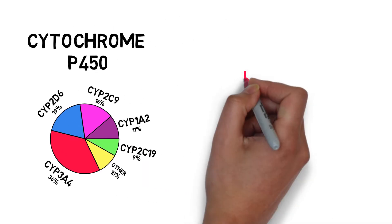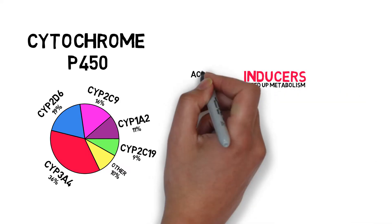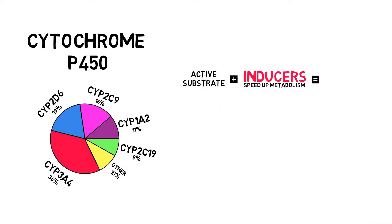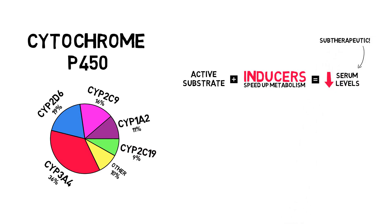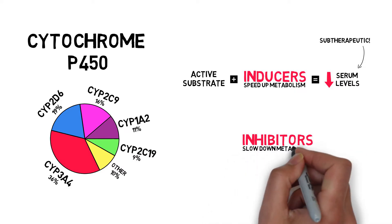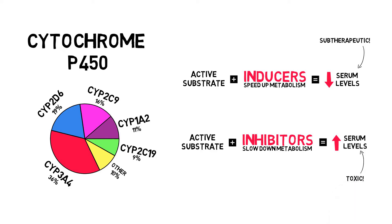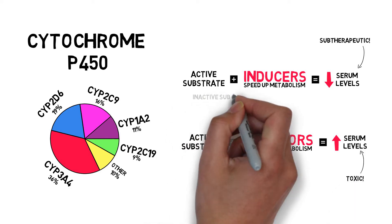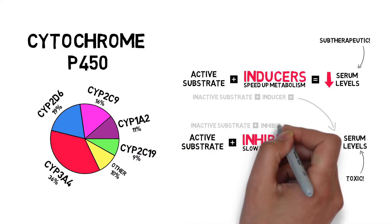If your drug is a substrate of these enzymes, inducing them will speed up the metabolic process, resulting in lower concentrations for drugs that are metabolized to an inactive form — which kinda sucks if it happens to be your antibiotic. Inhibiting these CYP enzymes will result in higher drug concentration, and thus possible toxicity. For drugs that are transformed to their active counterparts, inducers and inhibitors obviously have the opposite effect.